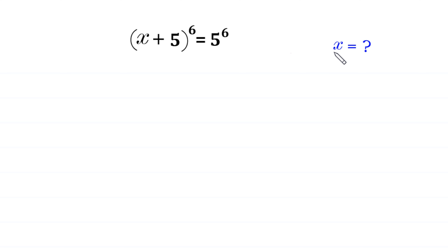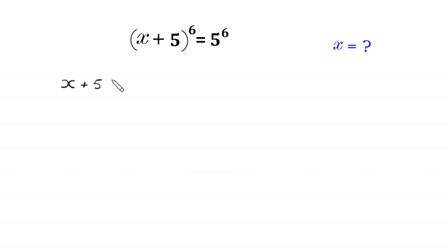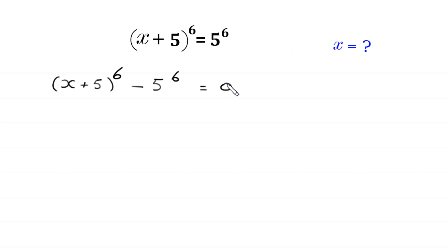Let us start by moving 5^6 to the left hand side. Then this equation will become (x + 5)^6 minus 5^6 is equal to 0.